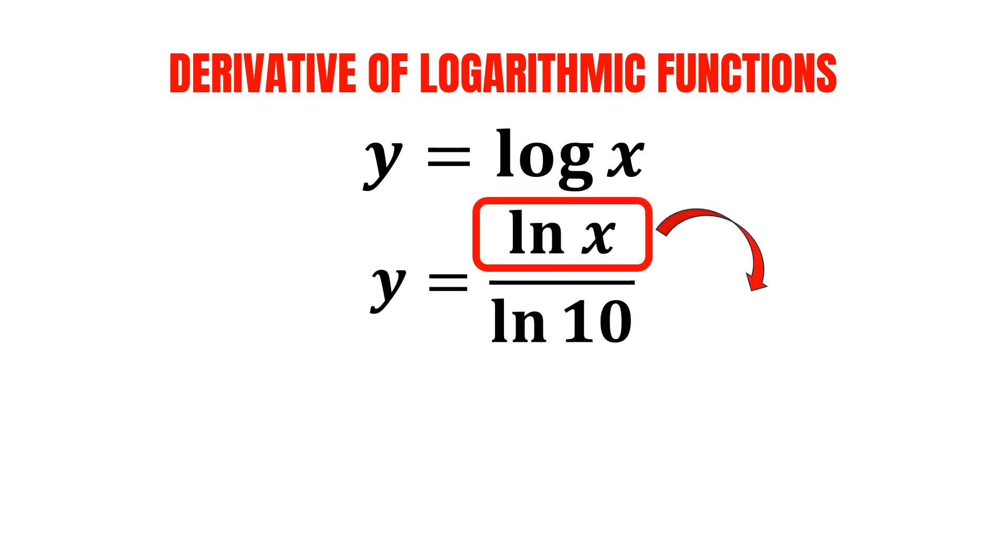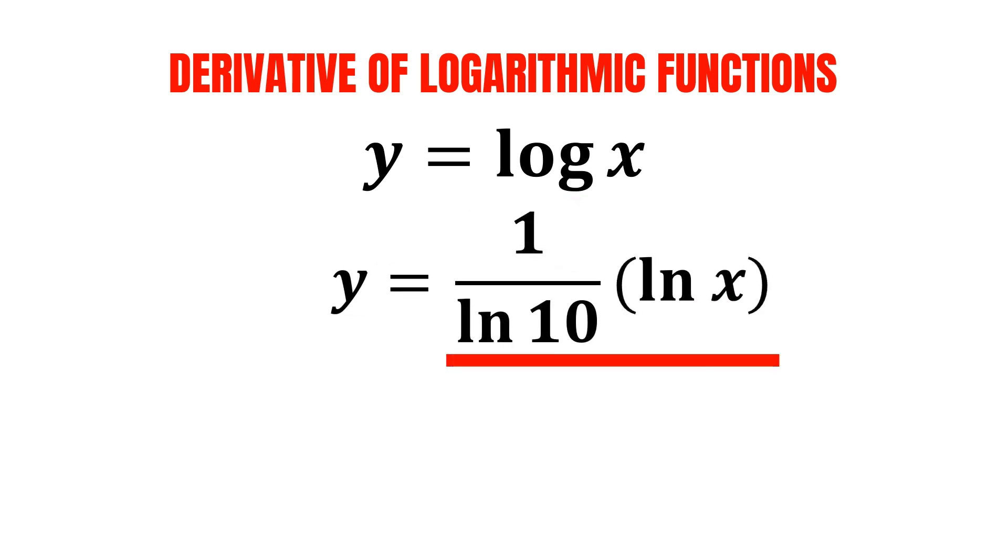Alternatively, we can try to rewrite this by bringing the ln x down, and we end up with 1 over natural log of 10 multiplied by ln x. This makes it even easier for us to find the derivative.